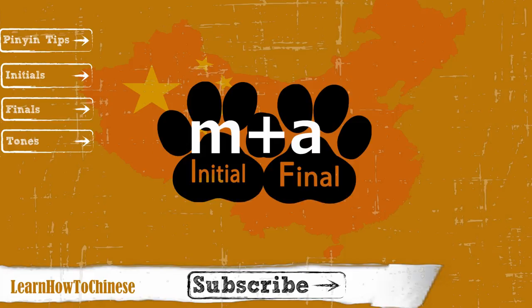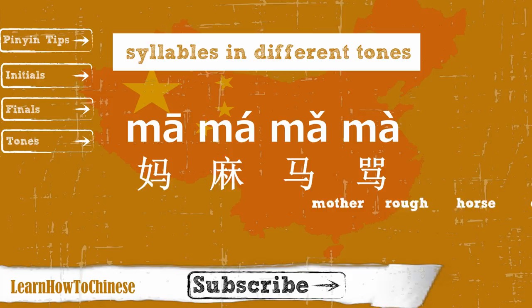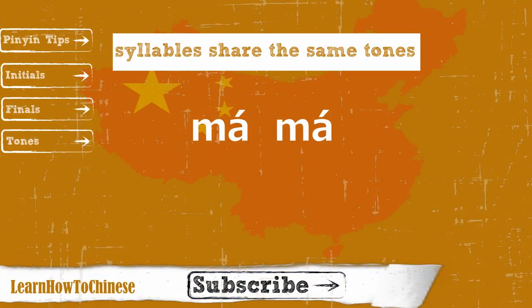When an initial and a final match together, they form a syllable. And the syllable can mean at least 4 different things, depending on which of the 4 tones you use. And of course, some words share the same tone but have different meanings and are written differently.